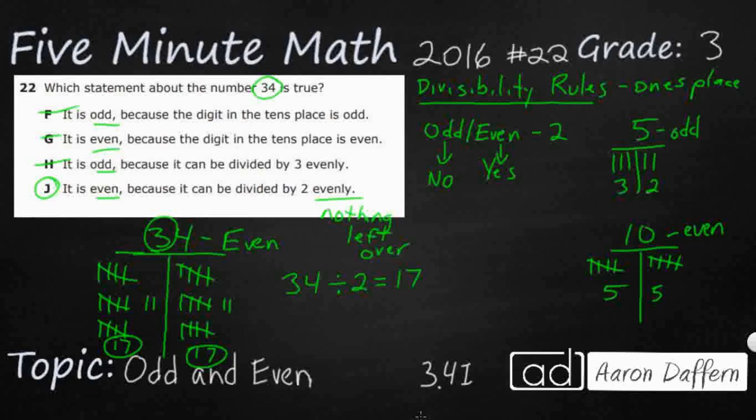So if the ones place has a digit of zero, two, four, six, eight, you notice I'm skip counting by twos, they're even. If the ones place has a digit of one, three, five, seven, nine, they're odd.